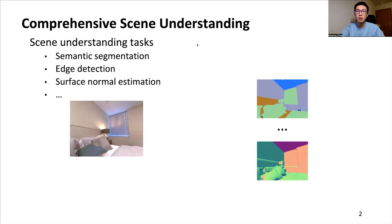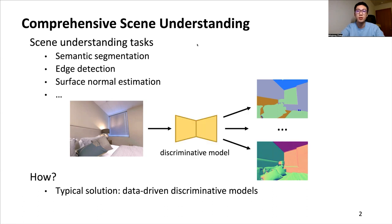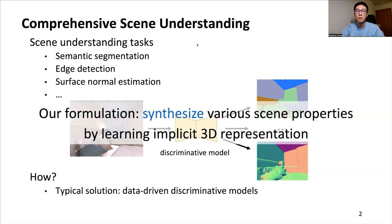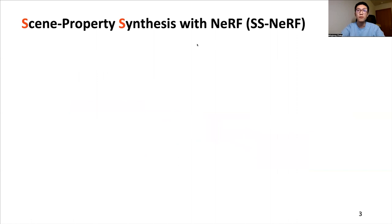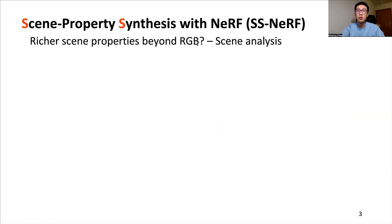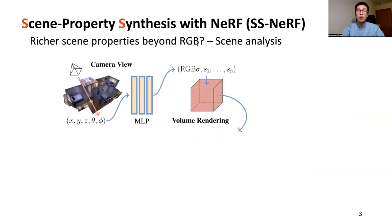A general method is to develop data-driven discriminative models for scene understanding. We propose a novel perspective to learn expressive 3D representations by synthesizing various scene properties. To achieve this, the important first step is to render photorealistic images. One of the most influential works for novel view synthesis is neural radiance field, known as NeRF. Here we are interested in the question: could this implicit representation be extended to richer scene properties beyond RGB?